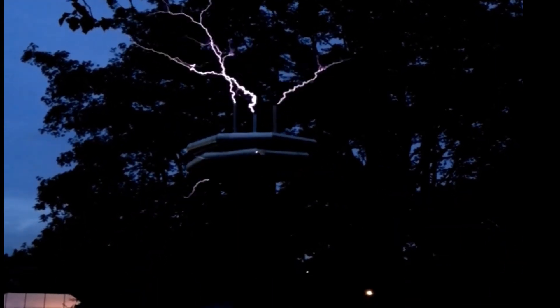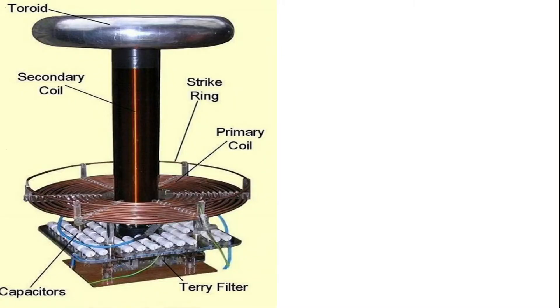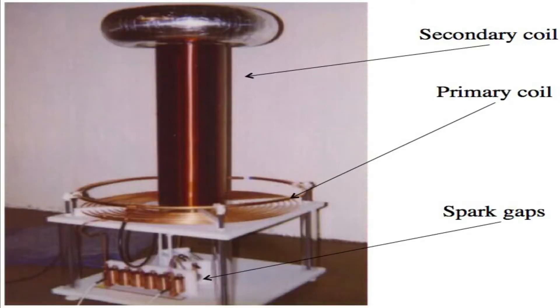A Tesla coil consists of two parts: a primary coil and secondary coil, each with its own capacitor. Capacitors store electrical energy just like batteries. The two coils and capacitors are connected by a spark gap, a gap of air between two electrodes that generates the spark of electricity.